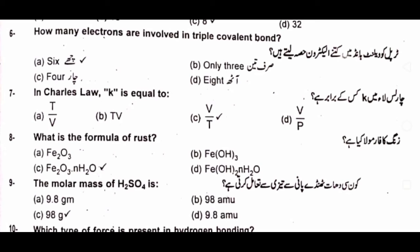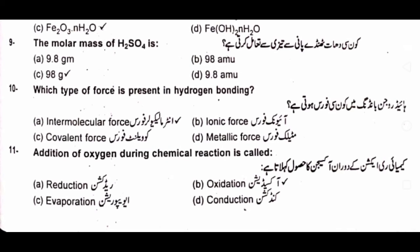Question nine: the molar mass of H₂SO₄ is A) 9.8 grams, B) 98 amu, C) 98 grams, D) 9.8 amu. The answer is C) 98 grams. Question number ten: which type of force is present in hydrogen bonding? A) intermolecular force, B) ionic force, C) covalent force, D) metallic force.